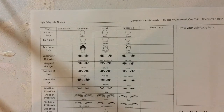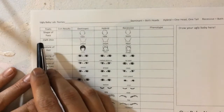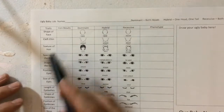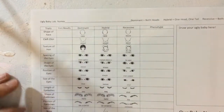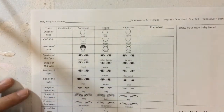In today's activity we're going to be exploring those inherited traits that you get from your parents by making ugly babies. You can go to the Science of Awesome website and download the sheet called the Ugly Baby Lab. On here we have various different traits that someone might have on their face — the shape of the face, the cleft chin, the texture of the hair, and so on.